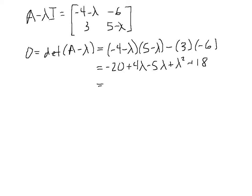Looks like negative 20 plus 4 lambda minus 5 lambda plus lambda squared plus 18. So if I rearrange that a little bit, we get lambda squared minus lambda minus 2. And that can be factored to lambda minus 2 times lambda plus 1.